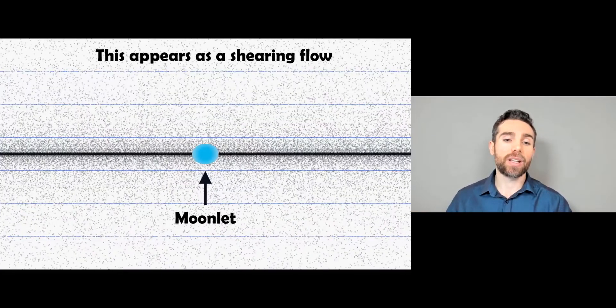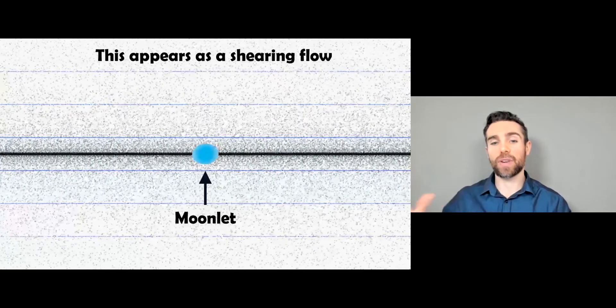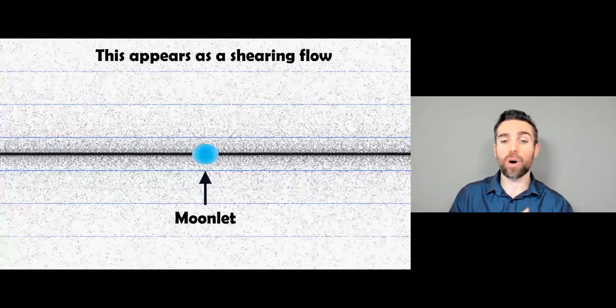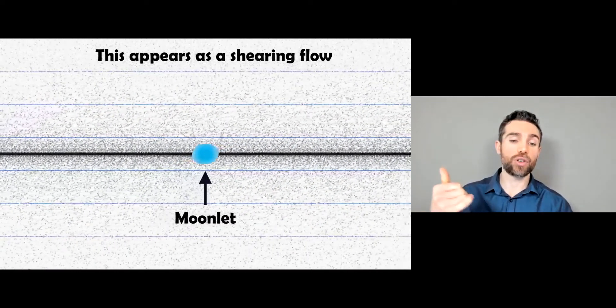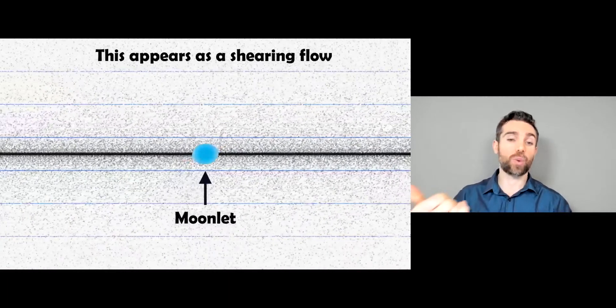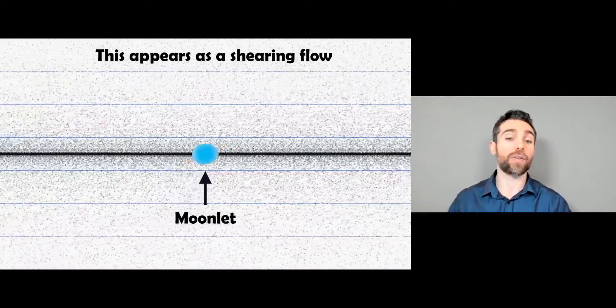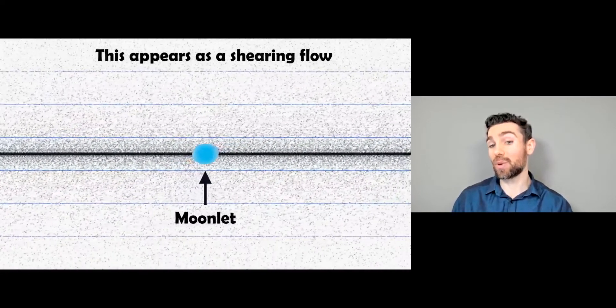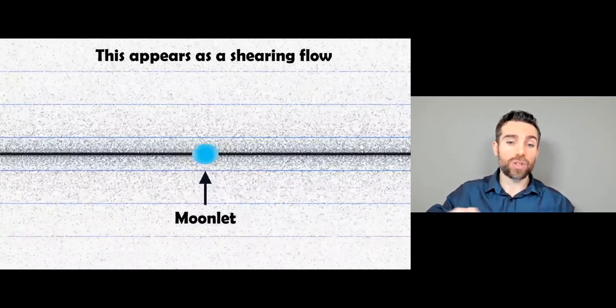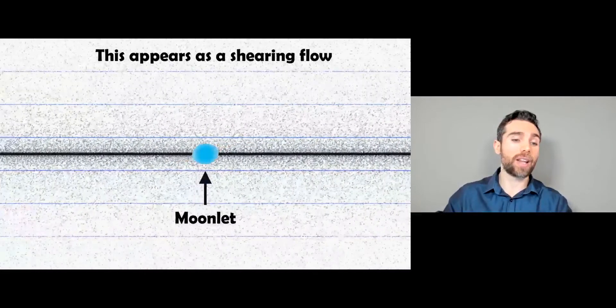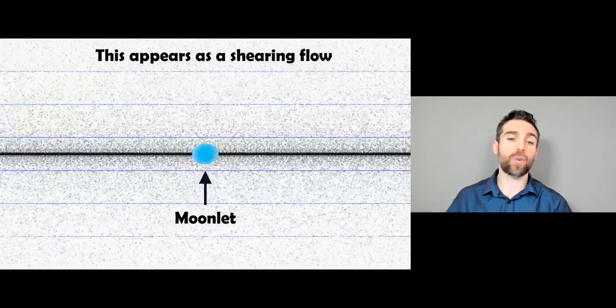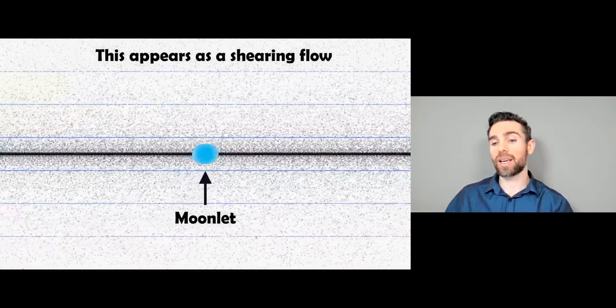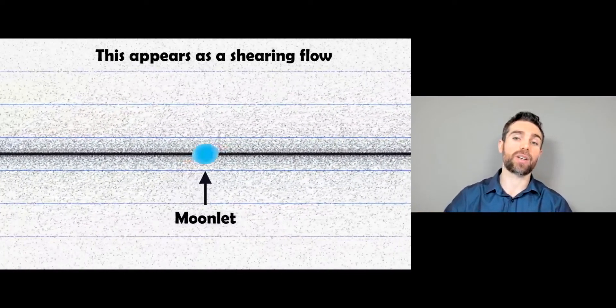And if that still doesn't make much sense, then hopefully this kind of visualization will. So if you were to put a camera on top of the moonlet and watch what happens to the ring particles around it, assuming that if you go down on here, that's towards Saturn, and if you go up, that is further away, you can see the relative movement of the particles in respect to the moonlet. So this is what causes that shearing flow. Anything closer to Saturn is traveling faster, anything further away is traveling slower. So you can see that that moonlet would overtake slower particles, yet the faster particles closer would overtake the moonlet.